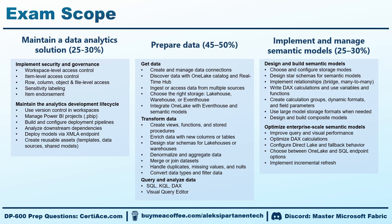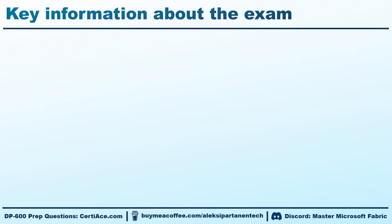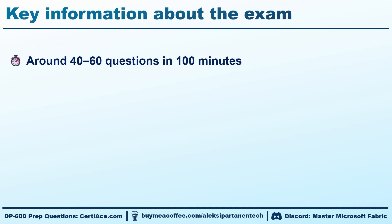Here is the entire scope of the DP600. As you can probably tell from the scope, passing this exam requires quite a lot of in-depth knowledge. But that is the reason why I'm making this course — so that the preparation for the exam would be easier. Now let's take a look at some key information about the exam. There will be roughly 40 to 60 questions, and you need to answer those in 100 minutes, so you can spend roughly 2 minutes per question — that is not that much time, since some questions can be quite long.